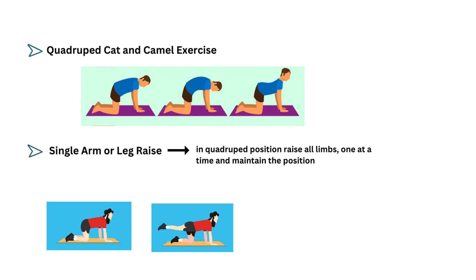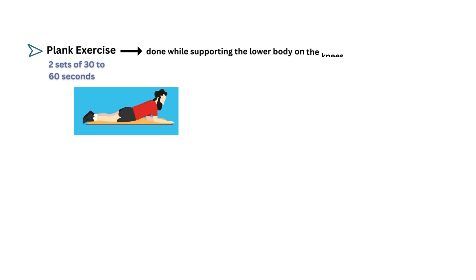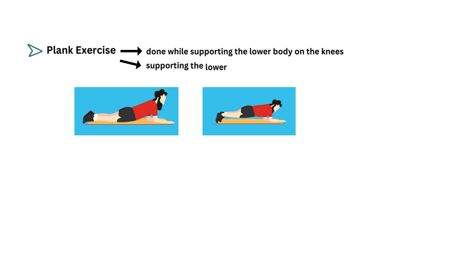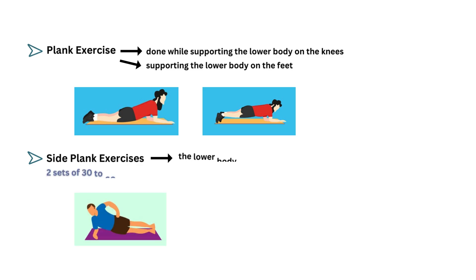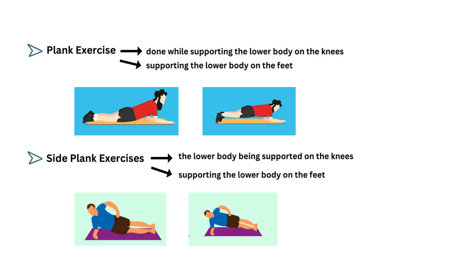The exercise is progressed to quadruped opposite arm and leg exercise. Plank exercise — the exercise is done while supporting the lower body on the knees, then progressed by supporting the lower body on the feet. Side plank exercise — it is performed with the lower body supported on the knees and then later by supporting the lower body on the feet.